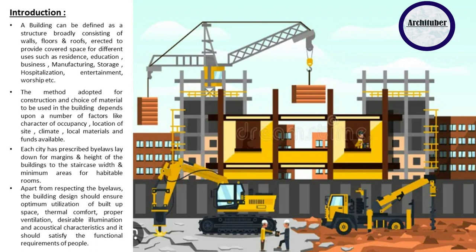The method adopted for construction and choice of material to be used in the building is also dependent on the factor of occupancy, the site location, the climate of the site, and the funds available. Each city has prescribed bylaws that specify different margins for the building, height for buildings, staircase width as per the typology, and minimum areas given the number and size of the plot. Apart from respecting bylaws, the building design should ensure optimum utilization of built-up space, thermal comfort, proper ventilation, desirable illumination, and acoustical characteristics.